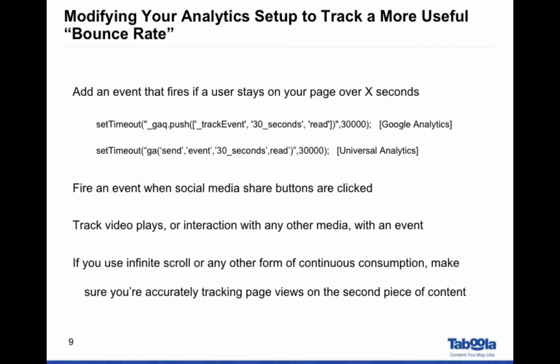The first thing we can do — it's actually pretty common — is to set an event that fires if somebody stays a certain amount of time on your page. In this case I use 30 seconds. I've put the code in here as an example, covering the two most common versions of Google Analytics. Essentially you set a timeout that says: if somebody's still here in 30 seconds, fire this code. The event is titled '30_seconds', so we can optimize against it and track exactly how many people spend over 30 seconds on our pages, which also allows our bounce rate to be more accurate.